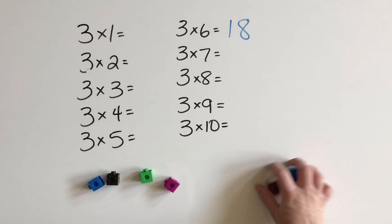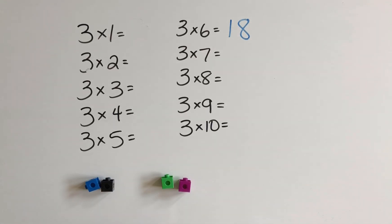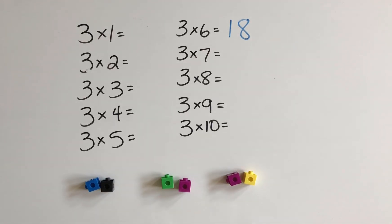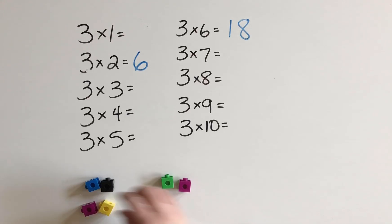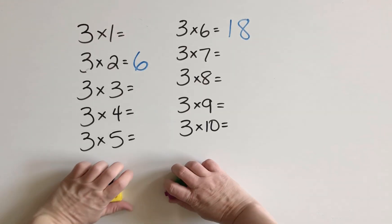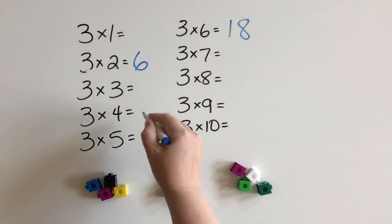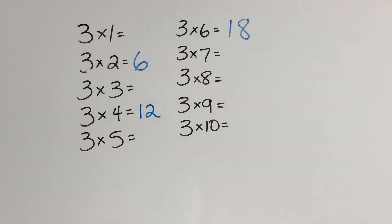Now let's do three times two. I'm going to start out by thinking about what I know about two times two. Two groups of two makes four, and then I'll just add one more group of two to make six. Let's take a look at three times four. We start out by making two groups of four — the double of four — so that's eight, and now I just add one more group of four to make twelve.